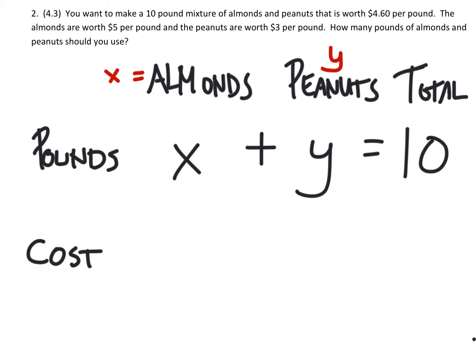Next we'll set up the equation for cost. We know that the cost for the pounds of almonds is going to be $5 per pound, so if we multiply that by the number of pounds we'll have the total cost of the almonds. But we'll add this to $3 per pound for every pound of peanuts.